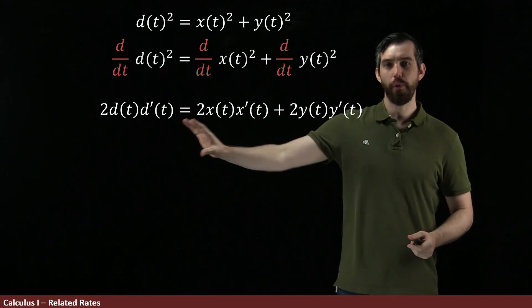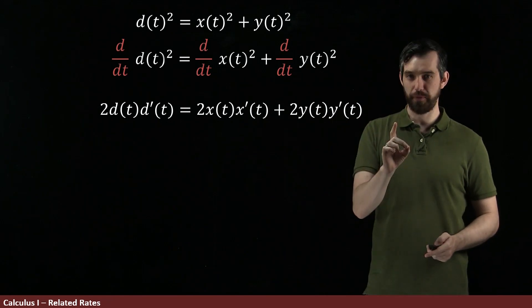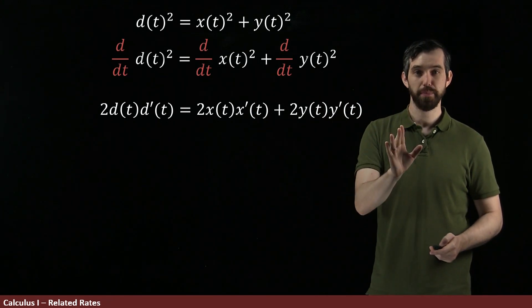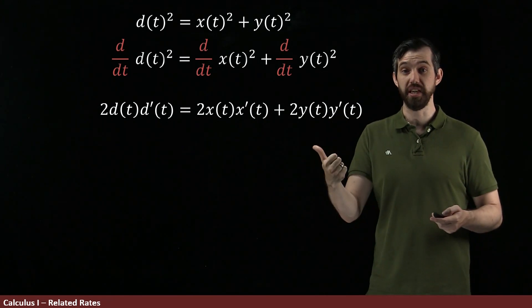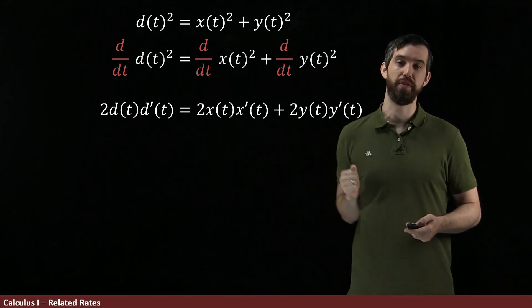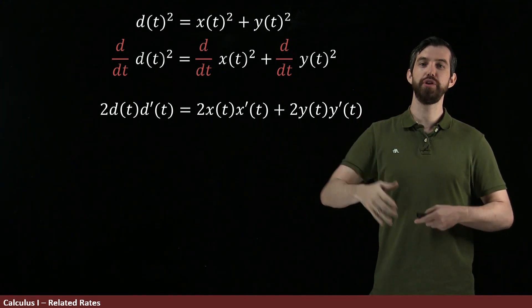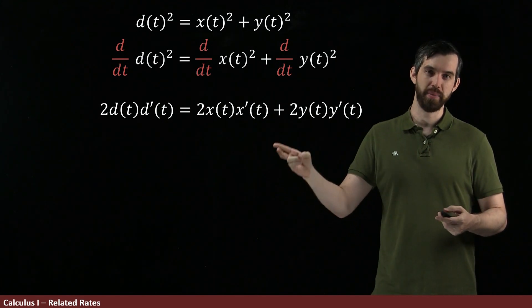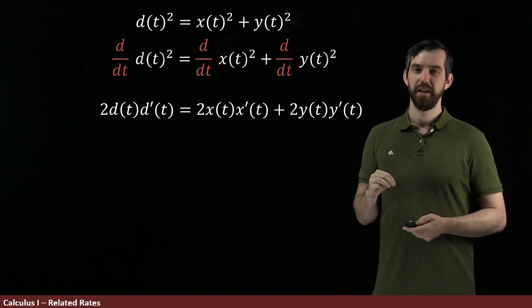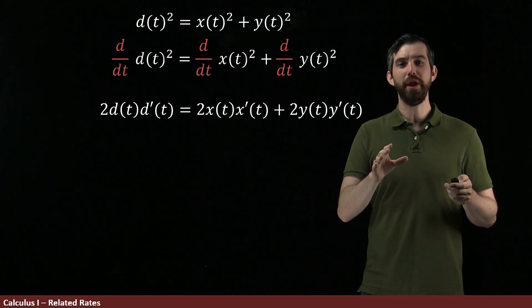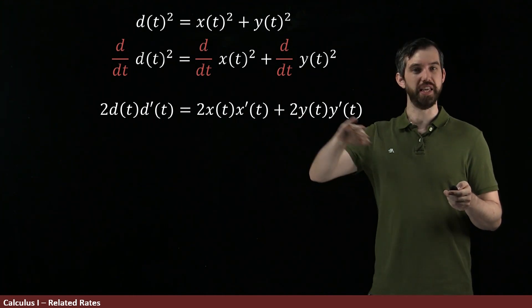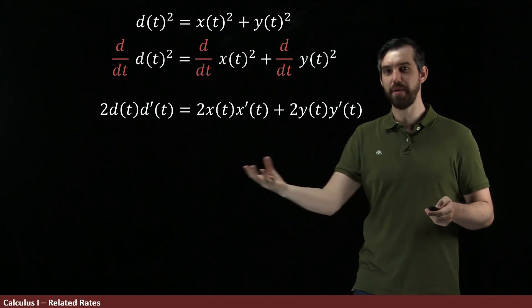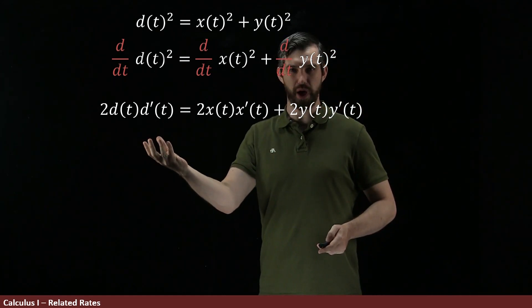Now, what's interesting about this equation that we have down here is I want you to note that it is relating the original variables, the d, the x, and the y. We can see that those are there, but it's also relating the derivatives of those variables. It's also relating the d prime, the x prime, and the y prime. If I'm really interested in the question, what is the rate of change of the distance between the two cars? I might be most interested in figuring out what the d prime is.